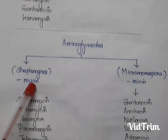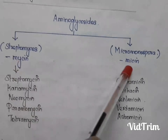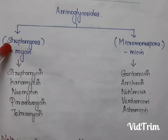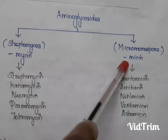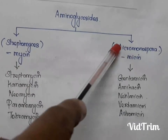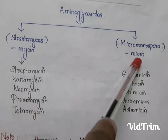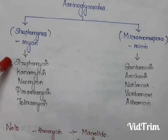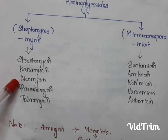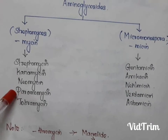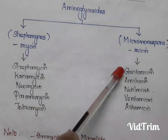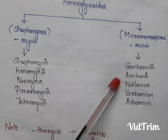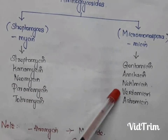Aminoglycosides are also classified based on their source into mycins and micins. If obtained from the genus Streptomyces, they are called mycins; if from the genus Micromonospora, they are called micins. Examples under mycins are streptomycin, kanamycin, neomycin, paromomycin, framycetin, and tobramycin. Examples under micins are gentamicin, amikacin, netilmicin, and verdamicin.